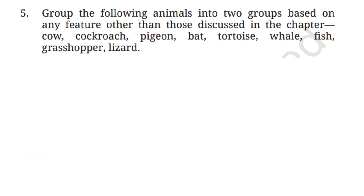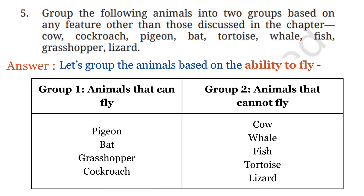Let's read question number 5. Group the following animals into two groups based on any feature other than those discussed in the chapter: cow, cockroach, pigeon, bat, tortoise, whale, fish, grasshopper, and lizard. Let's group them based on the ability to fly. Group 1 — animals that can fly: pigeon, bat, grasshopper, cockroach. These animals have wings and can fly, some only for short distances like grasshoppers and cockroaches, but can fly.